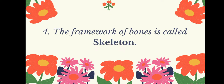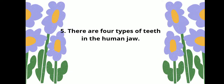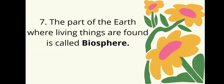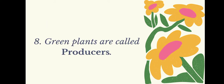The framework of bones is called the skeleton. There are four types of teeth in the human jaw. A tooth has two main parts: crown and root. The part of the earth where living things are found is called the biosphere. Green plants are called producers.